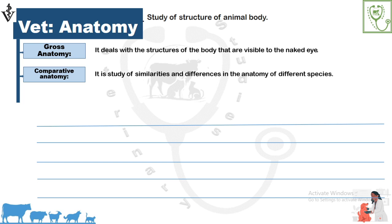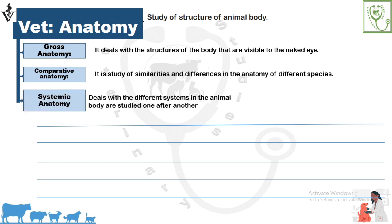The second type is comparative anatomy, in which we study about the similarities and differences in the anatomy of different species. For example, if we want to compare the anatomy of ruminants and equines: ruminants have 13 pairs of ribs in their rib cage, whereas equines have 18 pairs of ribs. Moreover, ruminants have a gallbladder in their digestive system, whereas equines lack a gallbladder in their digestive system.